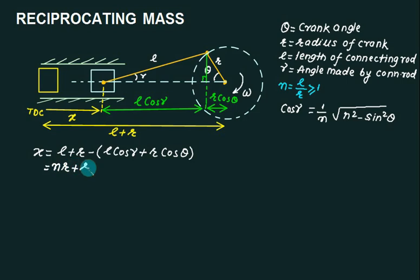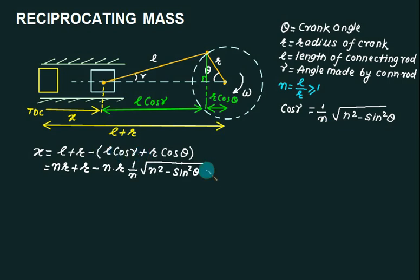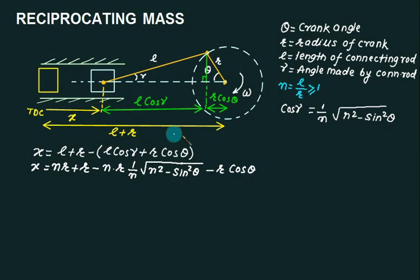Substituting L = N·R and the expression for cos(γ) into the displacement equation, X becomes a function of theta only — no longer dependent on gamma. So the displacement X is now a single function of theta, which is easily differentiable. If you know the crank radius R, the connecting rod length L, and the crank angle theta, you can substitute and get the piston position.